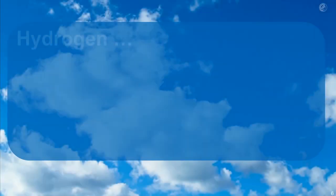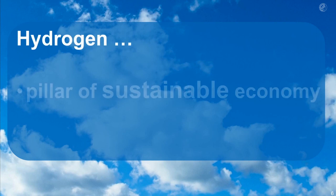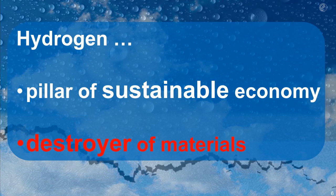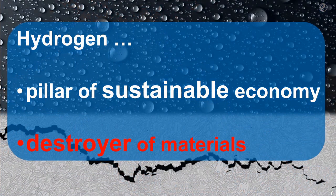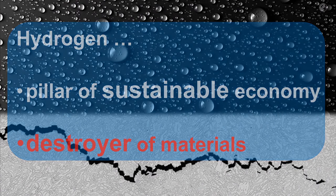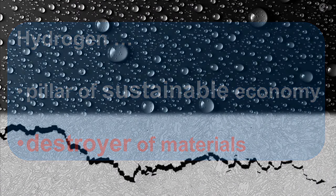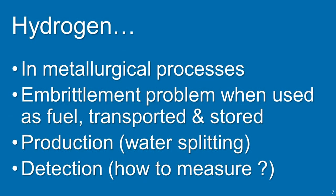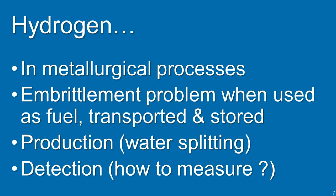Hydrogen has two faces when it comes to sustainability. The positive one is that it might be one of the essential future pillars for a more sustainable industry. The negative one is that hydrogen is a destroyer of materials, mainly through the so-called hydrogen embrittlement effect. It is important to know which parts are needed and which boundary conditions materials experience in a future hydrogen economy in order to develop materials that do not undergo hydrogen-induced embrittlement.